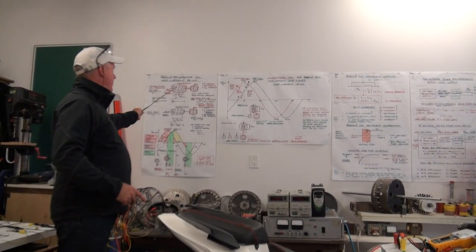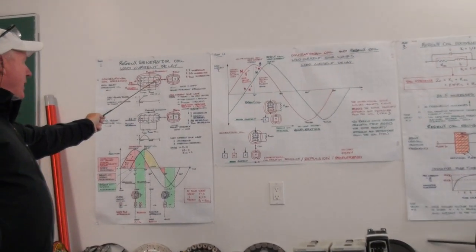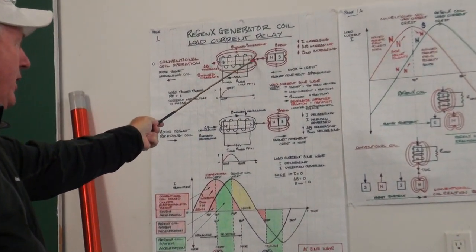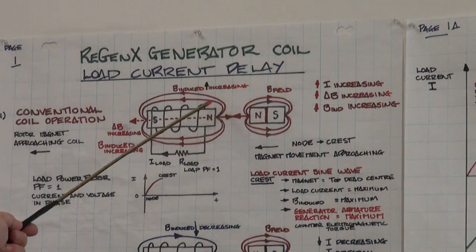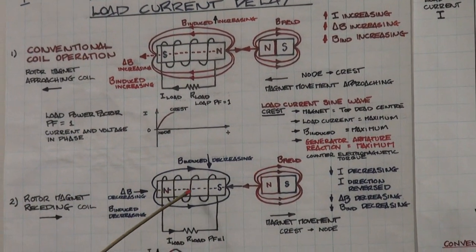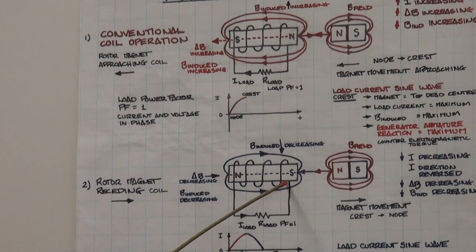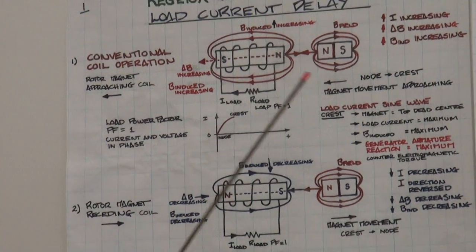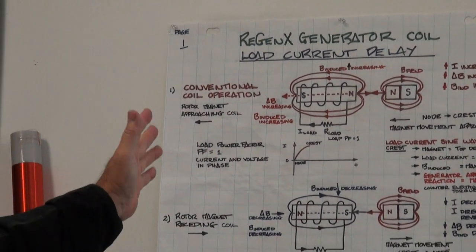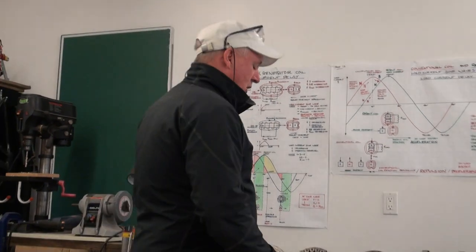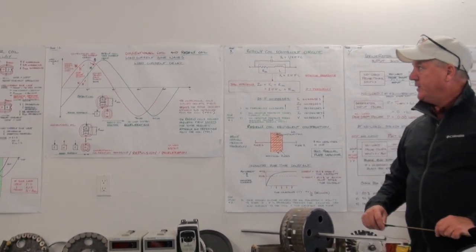In a conventional generator coil, when a north pole magnet approaches the coil, an induced magnetic field is produced so that a north pole opposes the approaching north pole rotor magnet. When the magnet is moving away, the current in the coil changes direction and a south pole is induced in the core, which opposes the magnet's departure. This is Newton's third law — Lenz's law — for every action there's an equal and opposite reaction. The Regen-X coil's load current delay is important to understanding how it works.